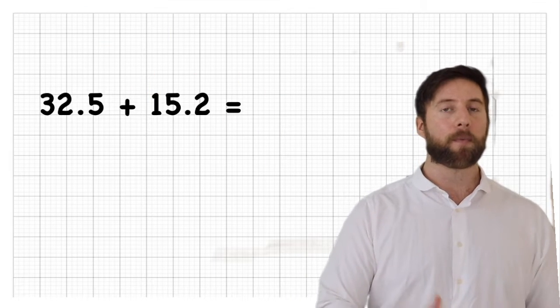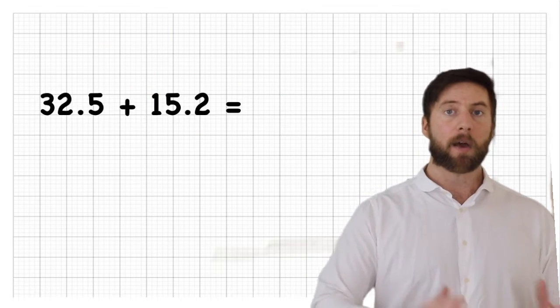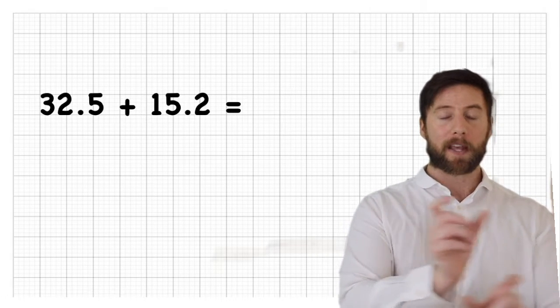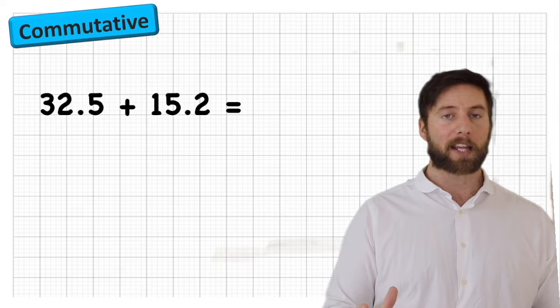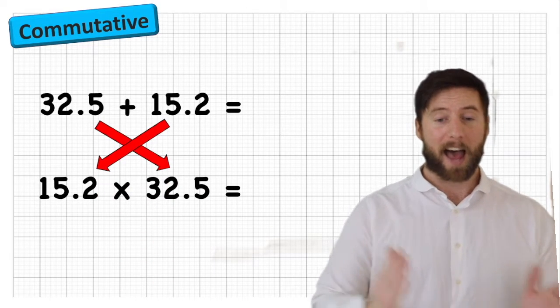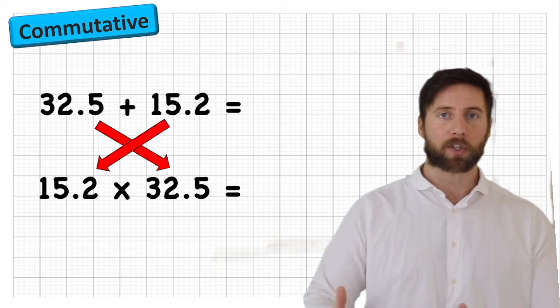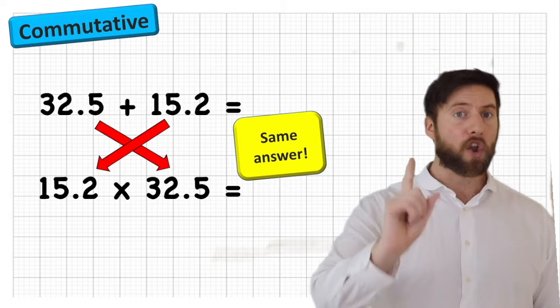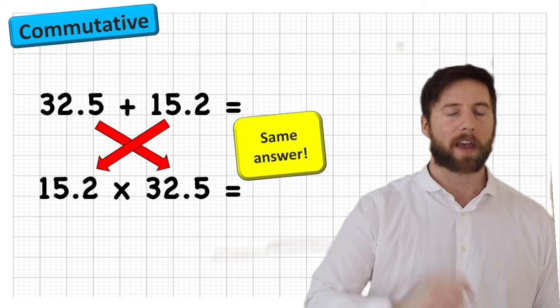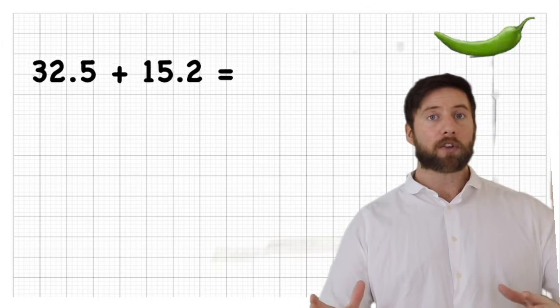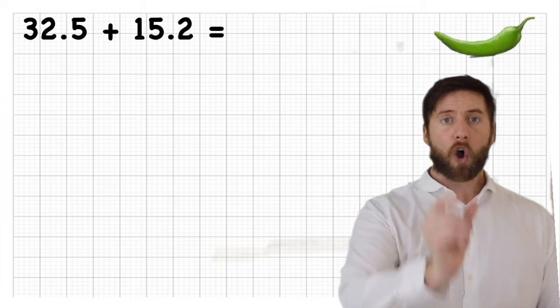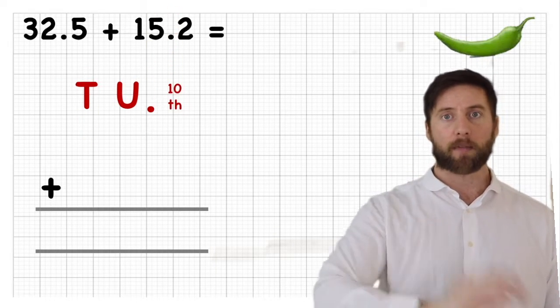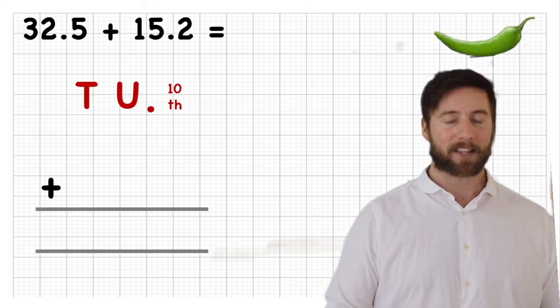So let's have a question. Let's have 32.5 add 15.2. Now remember, addition is commutative. It doesn't matter which way round we put these in our questions. So the good news is we are going to use the same structure, the same columns that we're used to in addition. However, we now have another column that we've not seen before. We now have the tenths column.